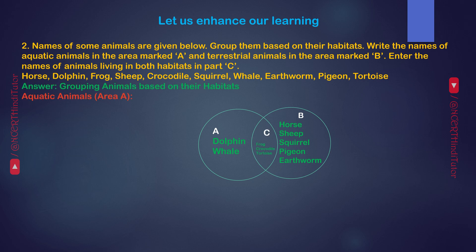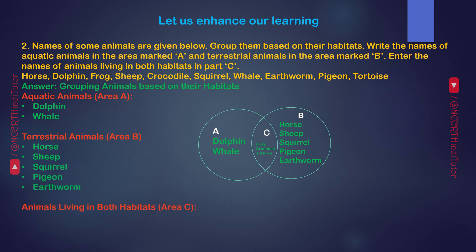Answer. Grouping animals based on their habitats. Aquatic animals, Area A: Dolphin and Whale. Terrestrial animals, Area B: Horse, Sheep, Squirrel, Pigeon, Earthworm. Animals living in both habitats, Area C: Frog, Crocodile, Tortoise.